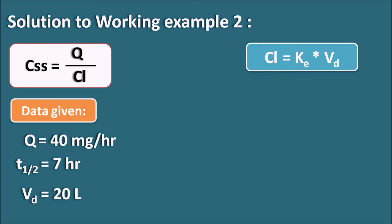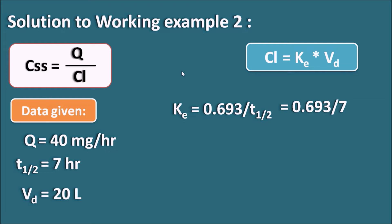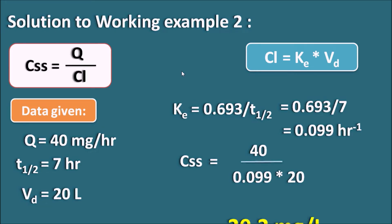Since T½ is given as 7 hours, Ke = 0.693 / 7 = 0.099 hour⁻¹. Substituting these values into the main equation: CSS = 40 / (0.099 × 20), which on simplification gives 20.2 mg per liter. Even when clearance is not directly given, we can calculate it from the elimination rate constant and volume of distribution, and Ke can be calculated from the half-life as Ke = 0.693 / T½.